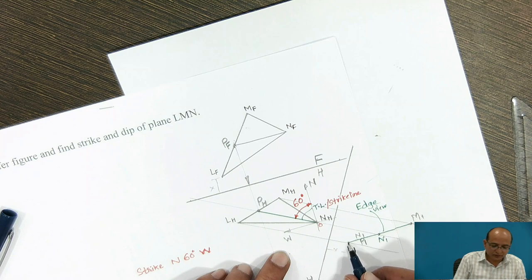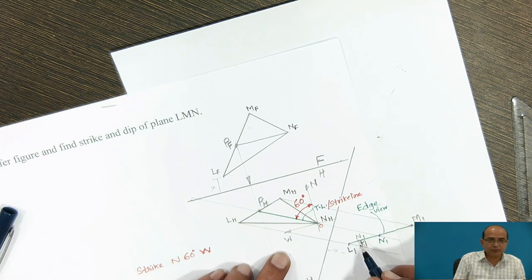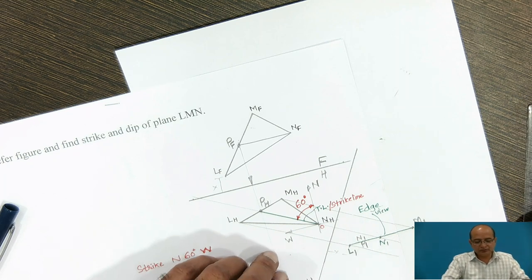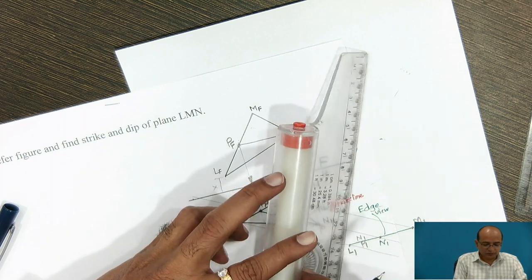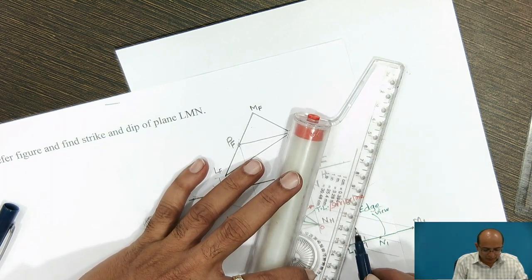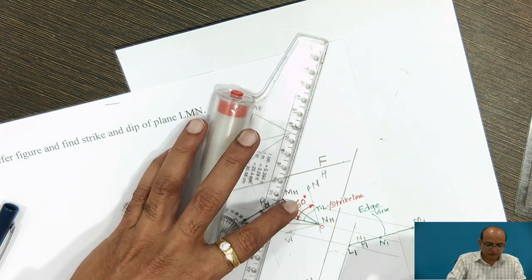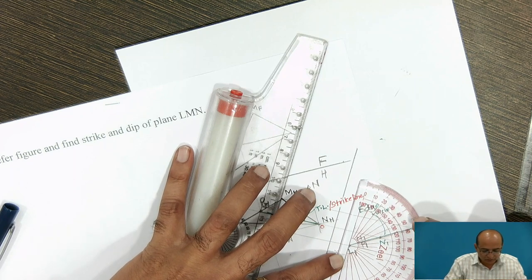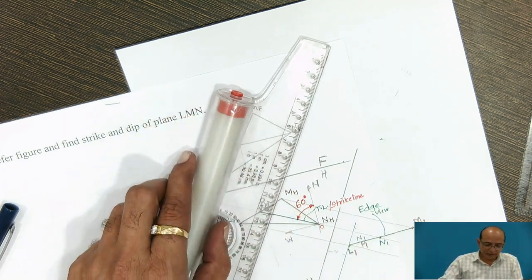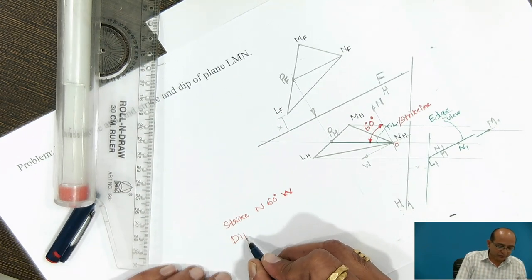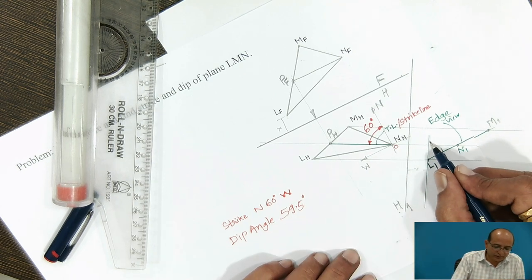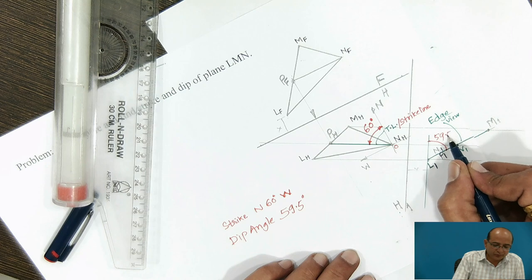The angle of this plane with respect to the ground — the horizontal reference plane — is the dip angle. This dip angle can be measured by extending the line at the L position and measuring the angle between the horizontal line and the HV of the plane. The angle subtended between this horizontal line and the HV is 59.5 degrees, so the dip angle of this plane is 59.5 degrees.